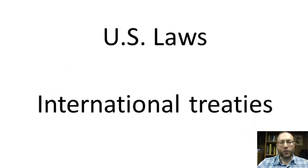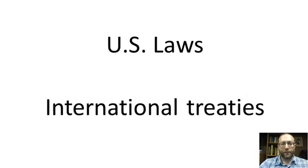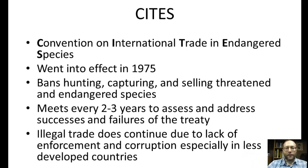One of the main ways of protecting endangered species is through laws and treaties. First is the CITES treaty — the Convention on International Trade in Endangered Species. This went into effect in 1975, and it bans hunting, capturing, and selling threatened and endangered species. They meet every two to three years to assess the successes and failures of the treaty. Despite this, illegal trading continues because of corruption and lack of enforcement, both in catching people and in penalties, and this is especially true in less developed countries. Regardless, CITES has done a lot in protecting endangered species.